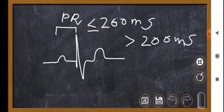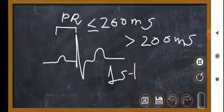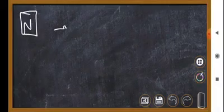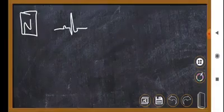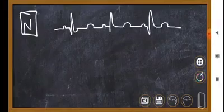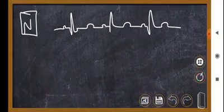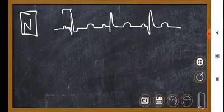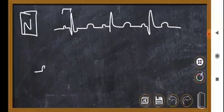Normal ECG which doesn't have any block. In case of first-degree heart block, the PR interval will be prolonged and it will be something like this.